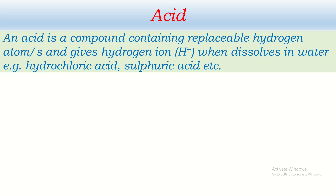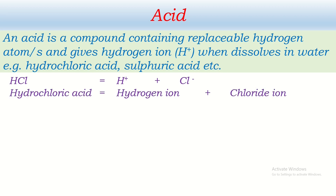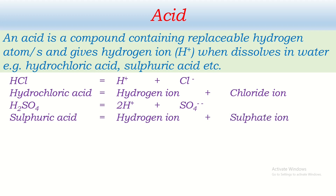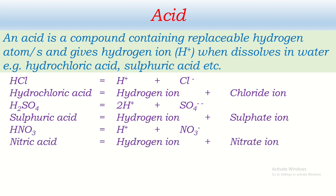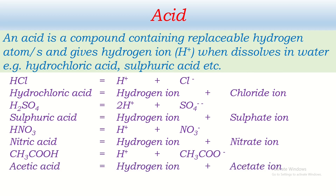Without the molecular formula of an acid and its ionization, we cannot fully understand it. Hydrochloric acid when dissolved in water gives hydrogen ion and chloride ion. Sulfuric acid gives hydrogen ion and sulfate ion. Nitric acid gives hydrogen ion and nitrate ion. Acetic acid, one of the organic acids, gives hydrogen ion and acetate ion. This is the characteristic of acid — it gives hydrogen ion in aqueous solution.